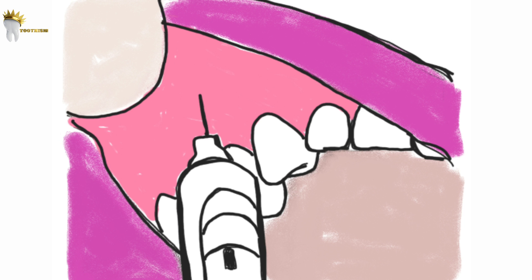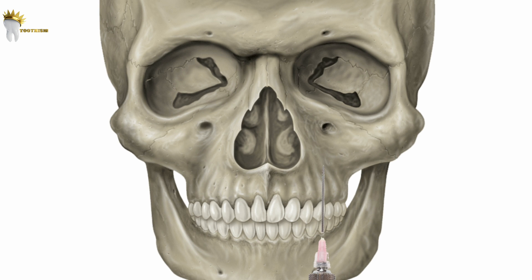Now we retract the lip and pull the tissues to make them taut. We can use our own finger or a mouth mirror for retracting; using the mirror is better as it protects us from needle stick injury. We insert the needle into the height of the mucobuccal fold over the first premolar with the bevel facing bone. The needle should be parallel to the long axis of the tooth, otherwise we might contact bone too soon. The syringe is oriented towards the infraorbital foramen, and the needle is advanced slowly until bone is contacted.